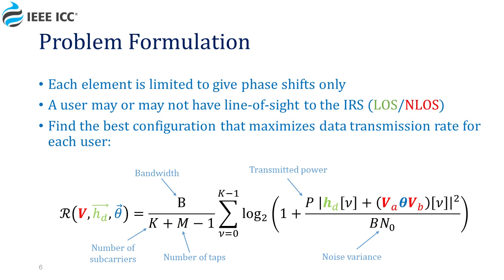In our problem, each element can change the phase of the signal reflected from it without changing the amplitude of the wave. While all users do not have a line of sight to the transmitter, some have a line of sight to the IRS and some do not. We'll mark them as LOS or NLOS according to their line of sight to the IRS only.